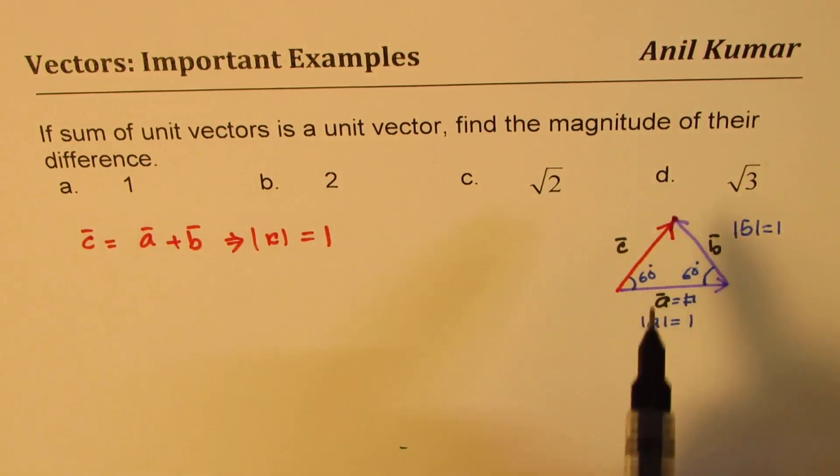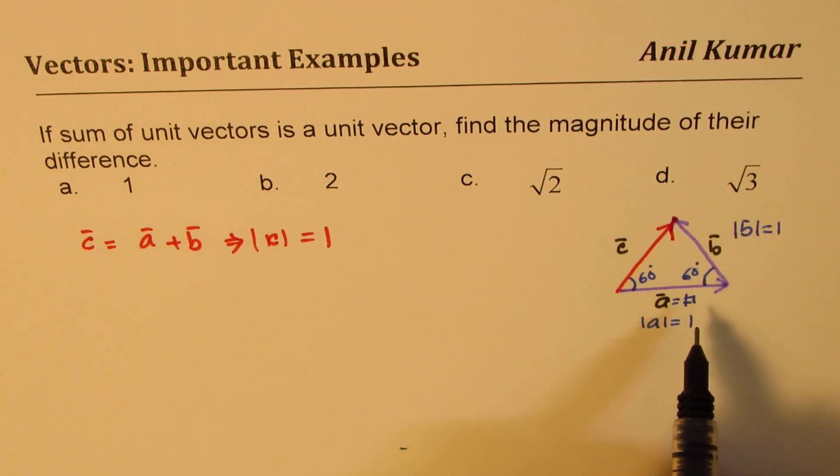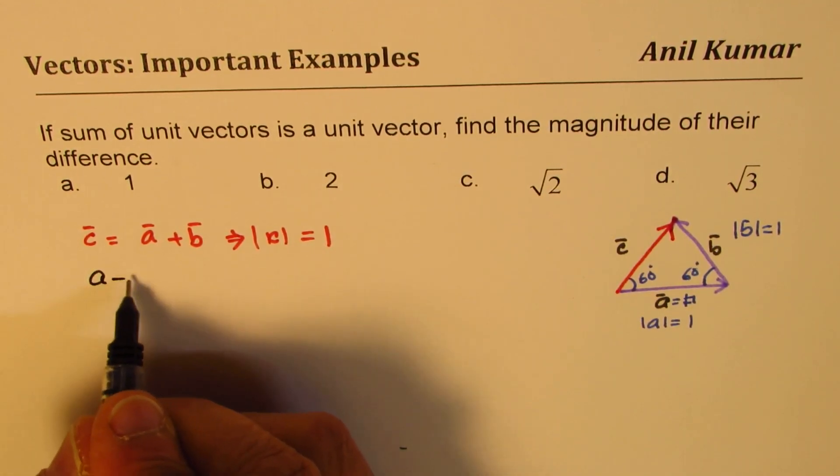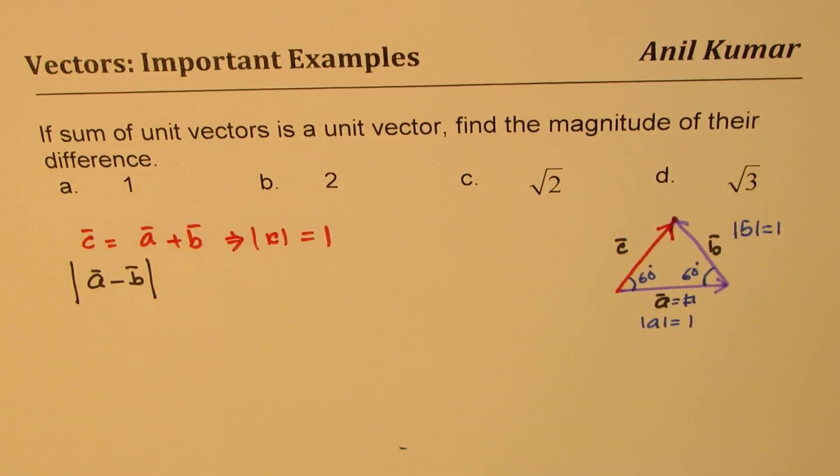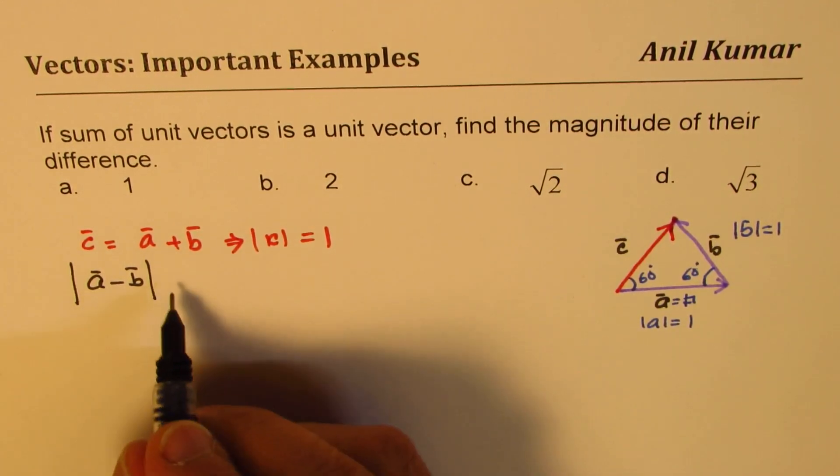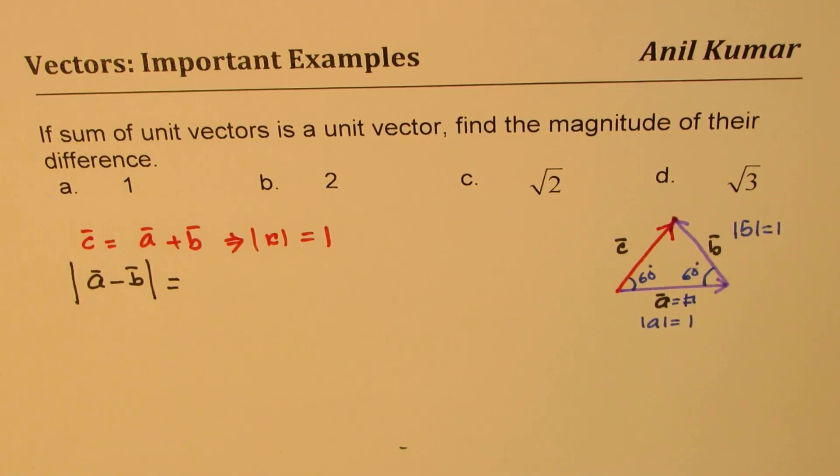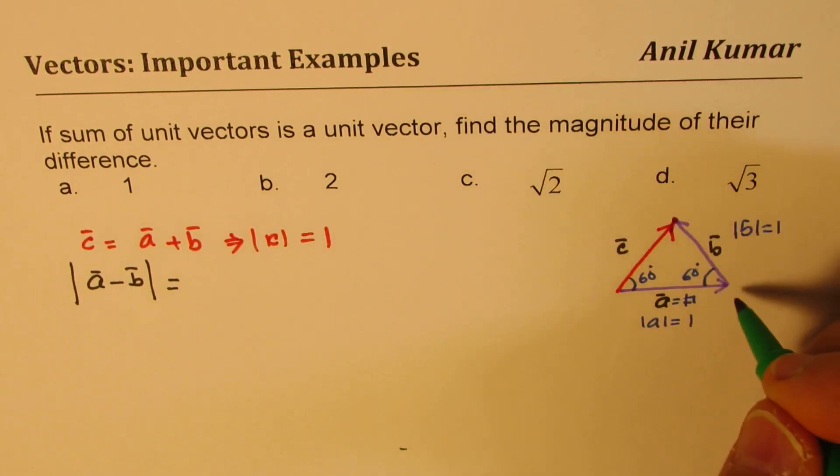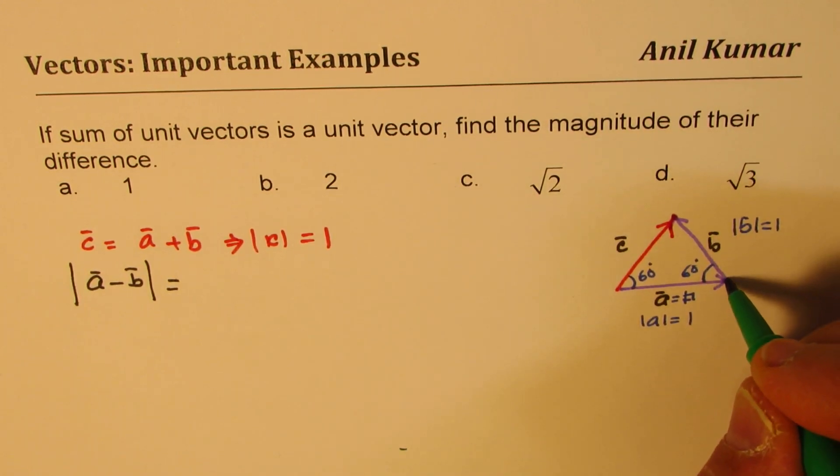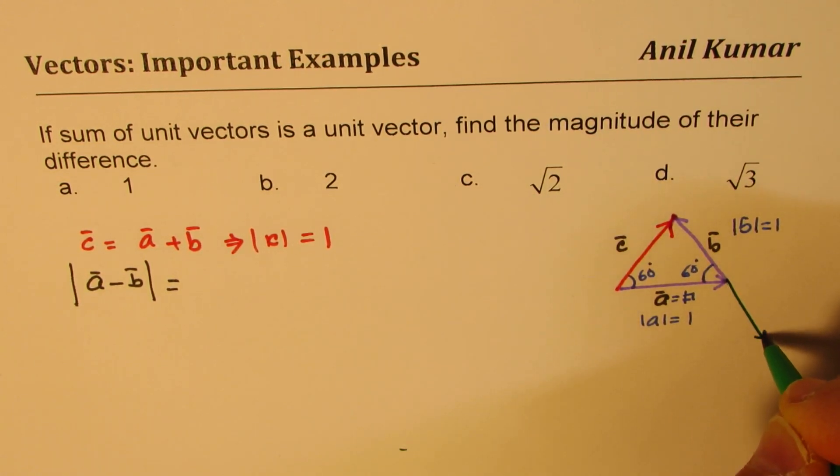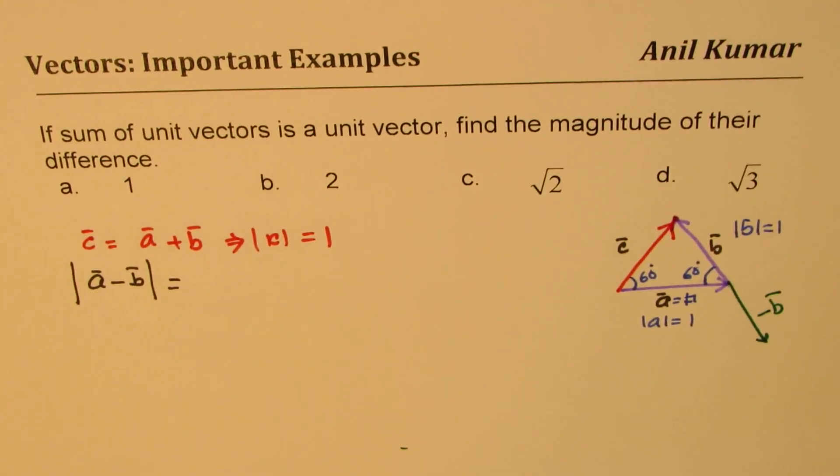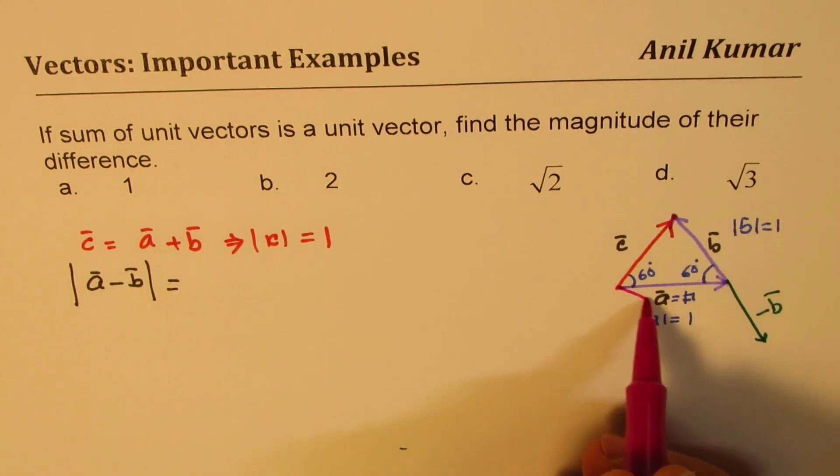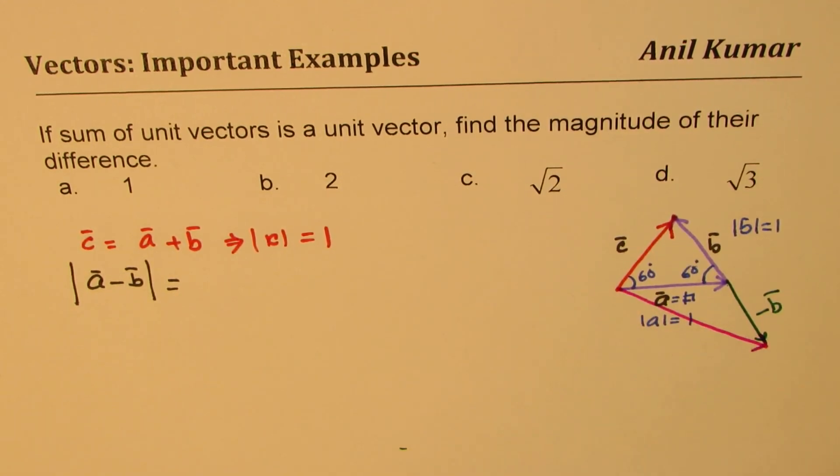Now we need to find the difference of A and B. So we need to find what is A minus B equals to and its magnitude. Find the magnitude of their difference. This is what we need to calculate. Well, if this is your B vector, then minus B will be in this direction. So that will be minus B. So when we want to say A minus B, in that case, the resultant will be like this.